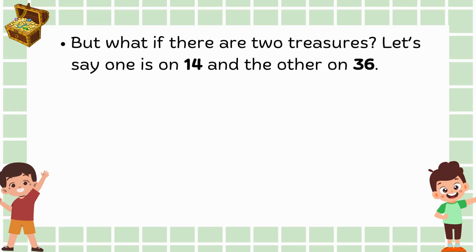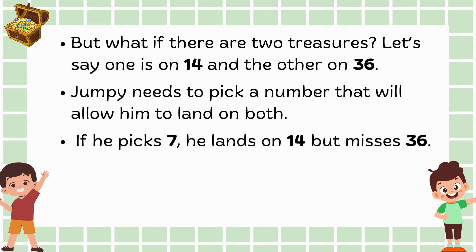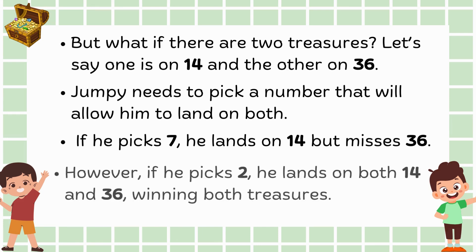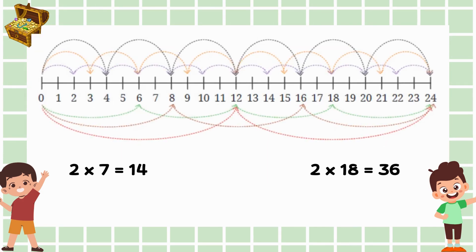But what if there are 2 treasures? Let's say one is on 14 and the other on 36. Jumpy needs to pick a number that will allow him to land on both. If he picks 7, he lands on 14 but misses 36. However, if he picks 2, he lands on both 14 and 36, winning both treasures.